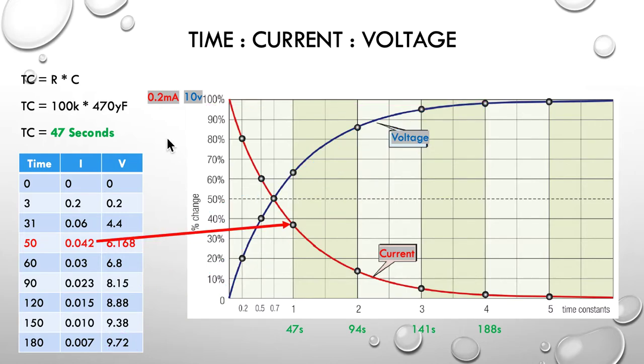So, now let's do it for current. So, at one time constant, there's the current, and if we project back at 42, about 0.04 of a milliamp.